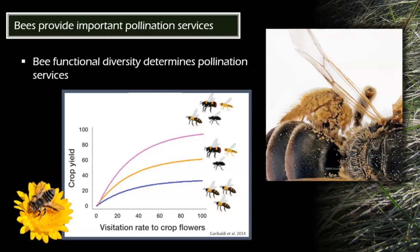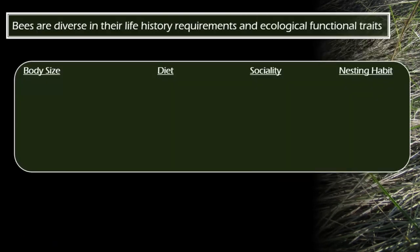Bee functional diversity determines their pollination services. I like to use this figure that shows how crop yield increases with a more diverse set of bees or pollinators. That's focused on crop systems, but the same principle applies in natural systems — the more types of bees you have, the more types of pollination services you have to fit many different types of plants. So it's really important to keep that functional diversity present on grasslands.